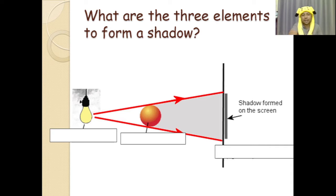What are the three elements to form a shadow? Well, in order to form a shadow, you must have number one: a light source. A light source may be a fluorescent bulb, a light bulb, or even a flashlight.